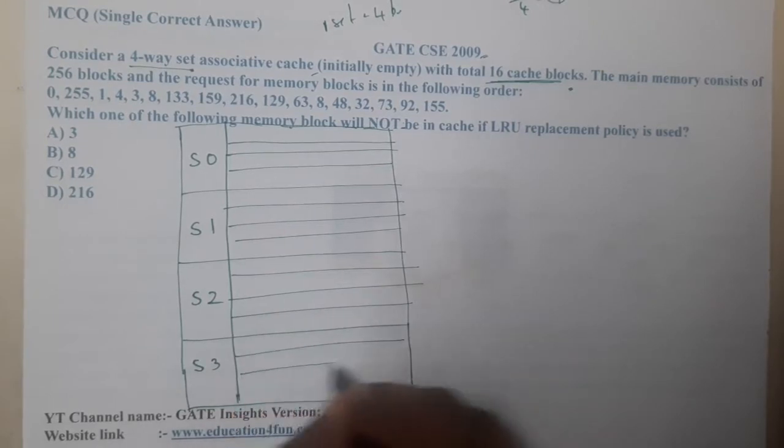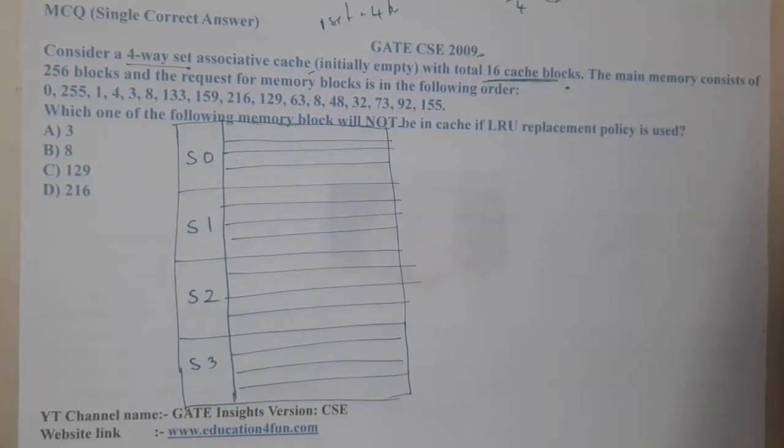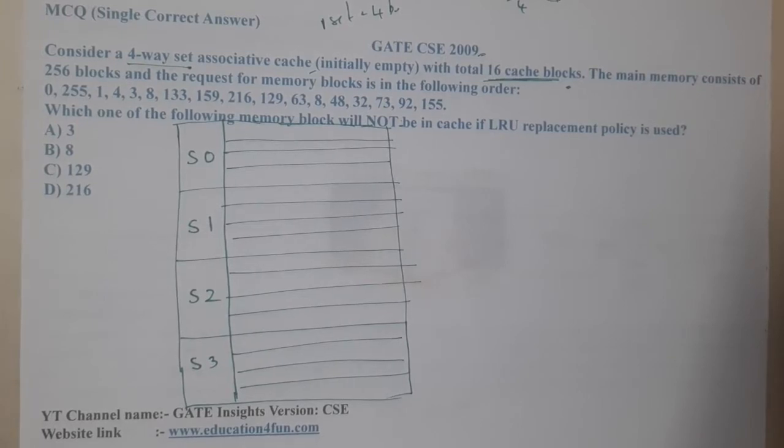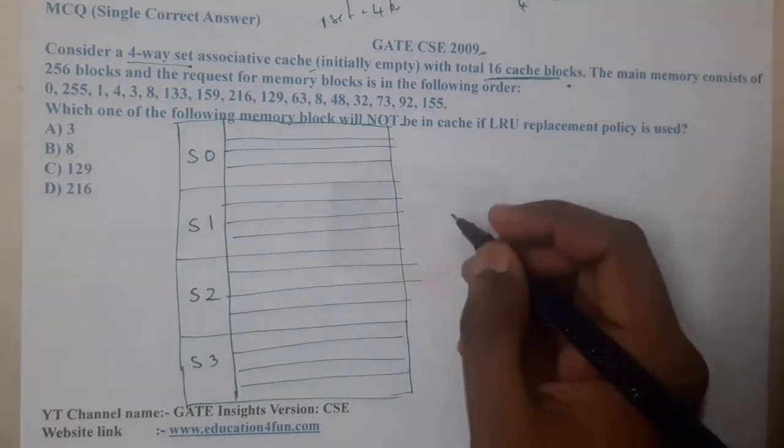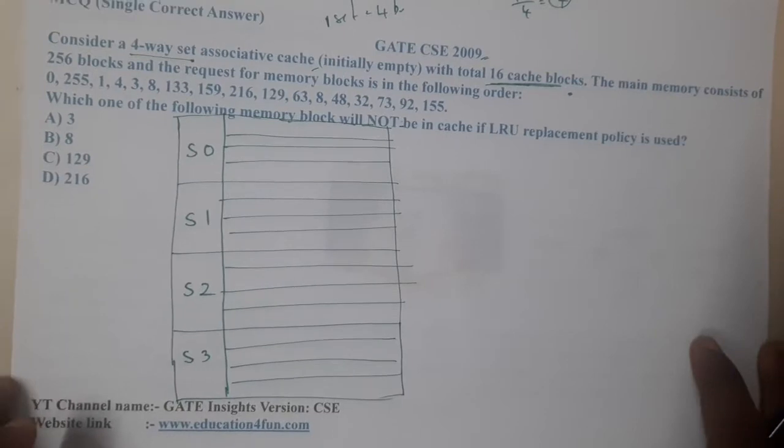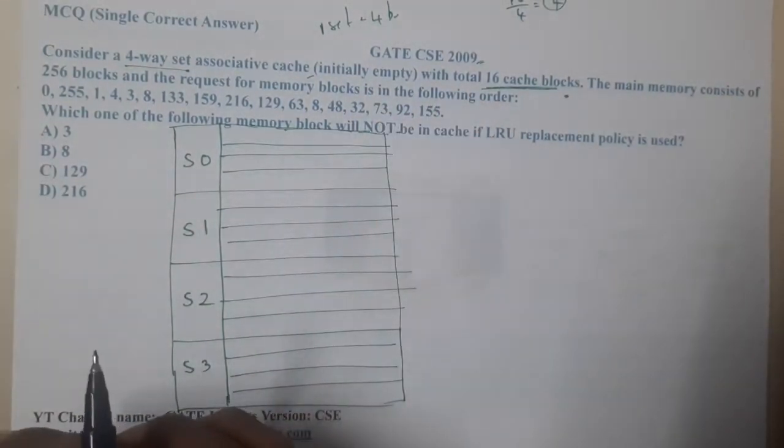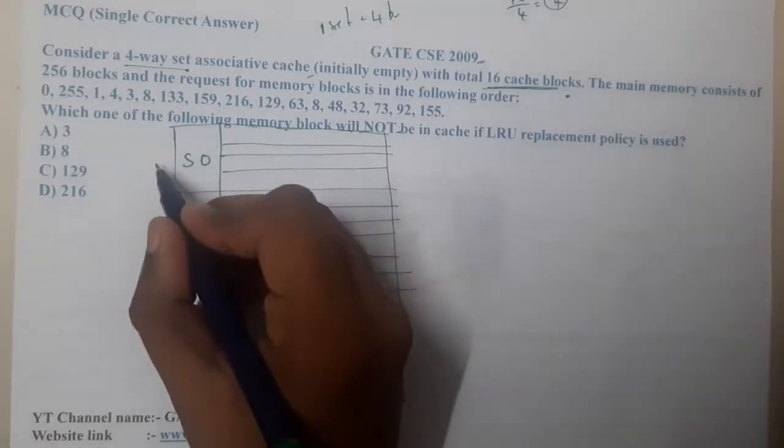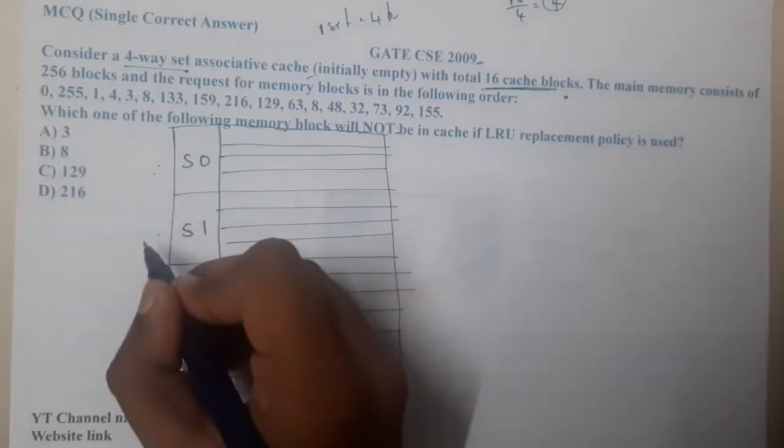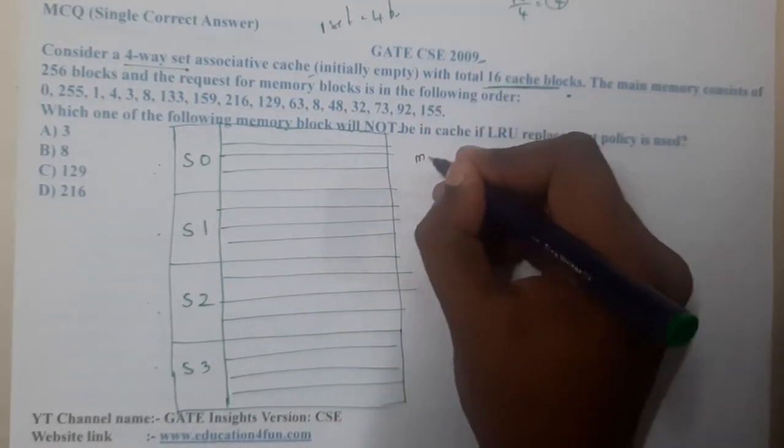In each set I am having 4 slots, so I need to draw three lines. Now everyone got a clear idea with respect to the diagram. So now the question is, we want to divide these particular blocks among these particular sets. If you recall, the logic will be 0, 1, 2, 3, 4, 5, 6, 7 in that way, right? So that logic is mod 4 logic.